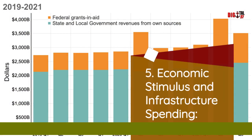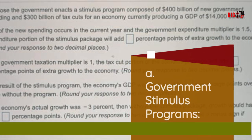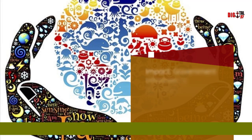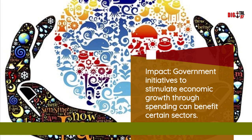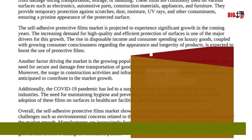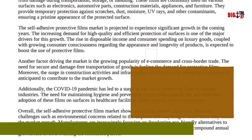Economic stimulus and infrastructure spending — government stimulus programs impact: government initiatives to stimulate economic growth through spending can benefit certain sectors. For example, infrastructure spending may boost construction and related industries.